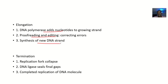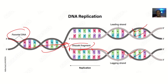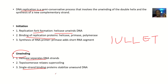Termination is after all the process — it has to stop. The replication fork will collapse. DNA ligase will seal all the holes made on the Okazaki fragments, and there's a completed replica of the DNA molecule. So that's it for the events of DNA replication. The mnemonics: I stands for initiation, U stands for unwinding, L stands for leading strand, the other L stands for lagging strand, E stands for elongation, and T stands for termination.